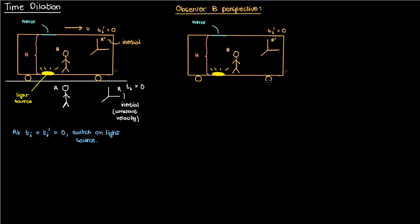According to observer B, when the light source is switched on, the ray of light travels vertically upwards, strikes the mirror, and then travels back down to the source. This makes common sense — if you shine a laser on the floor towards a mirror on the ceiling, the laser goes up and then reflects back down. Observer B isn't moving with respect to the source and mirror, so this is what the situation looks like to him.